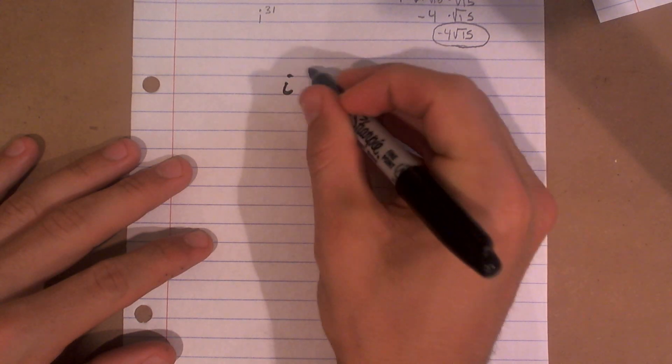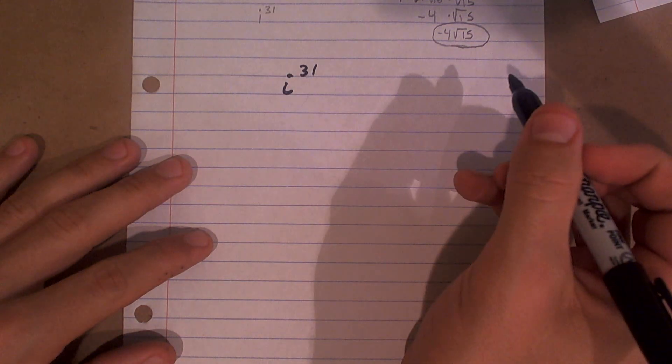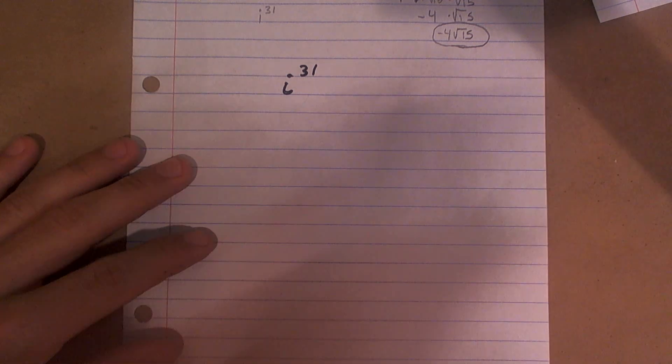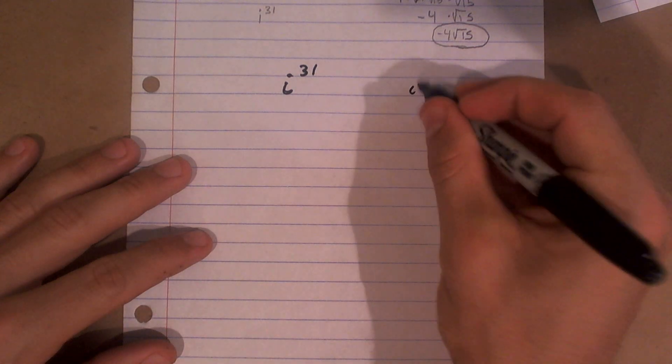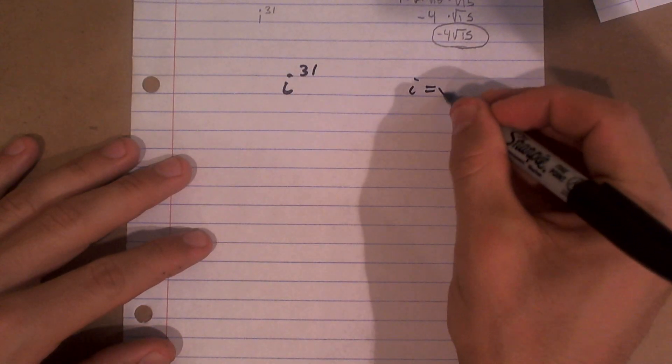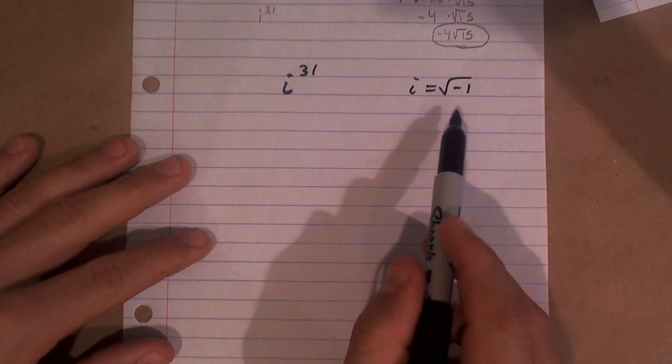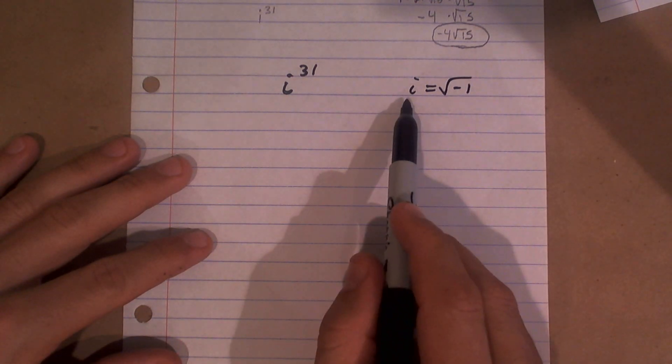So let's do i. We've got to figure out i to the third first. Alright, so going back through, we remember what i is, right? i is the square root of negative 1. You can't take the square root of a negative number, so that's our imaginary i.